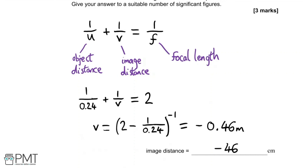In terms of marks, you'll get the first mark for stating the equation and substituting in the values, a second mark for calculating the correct value, and a third mark for getting the correct number of significant figures. So three marks there.